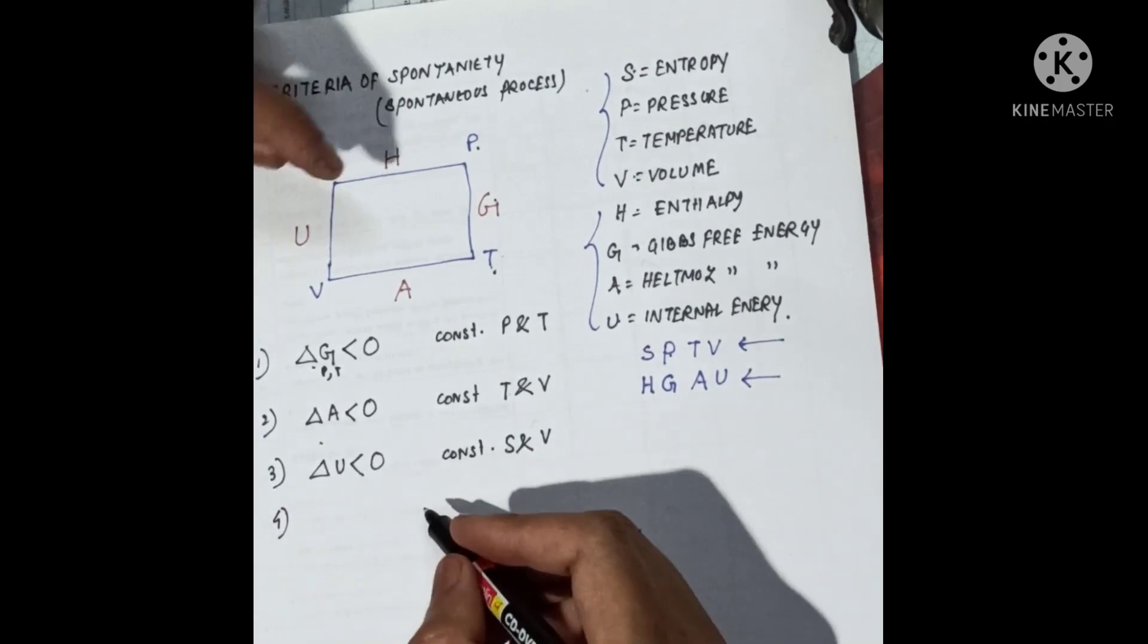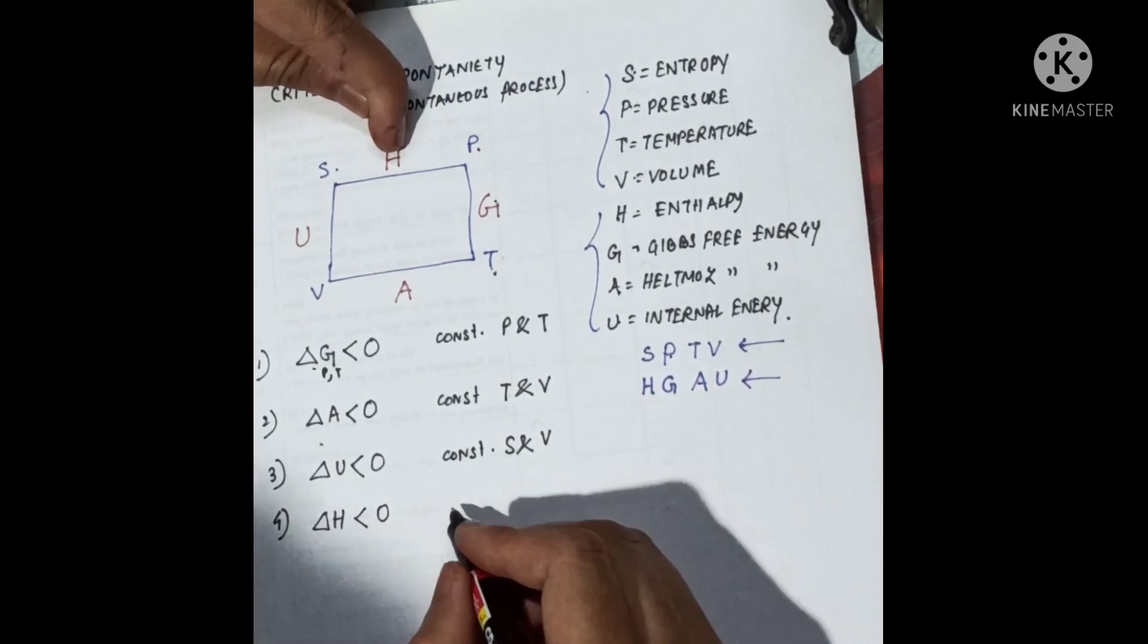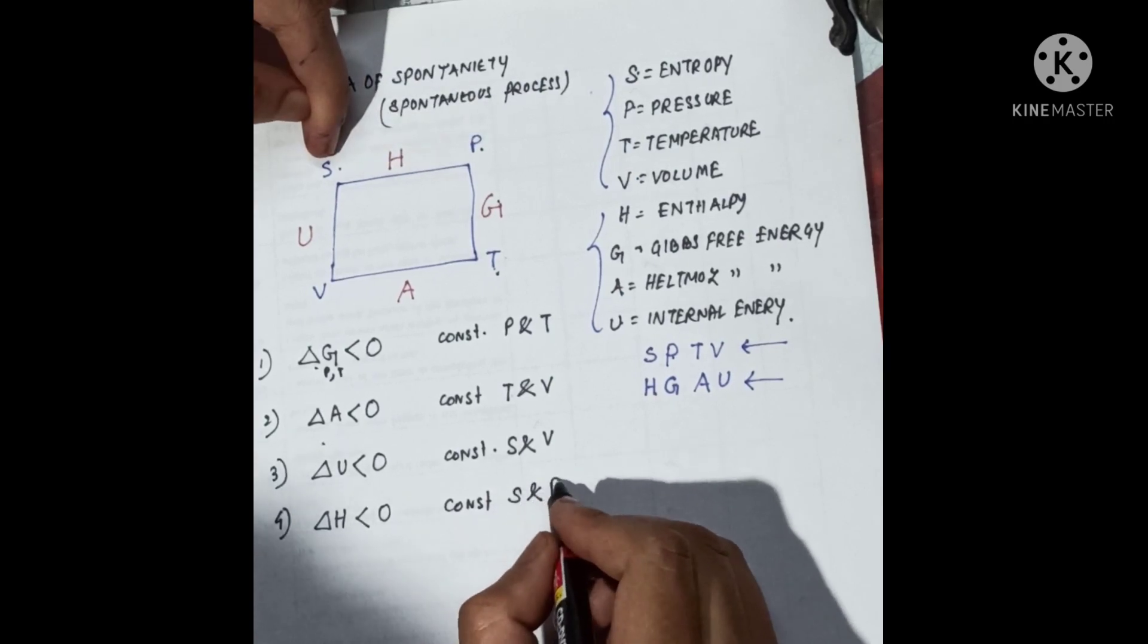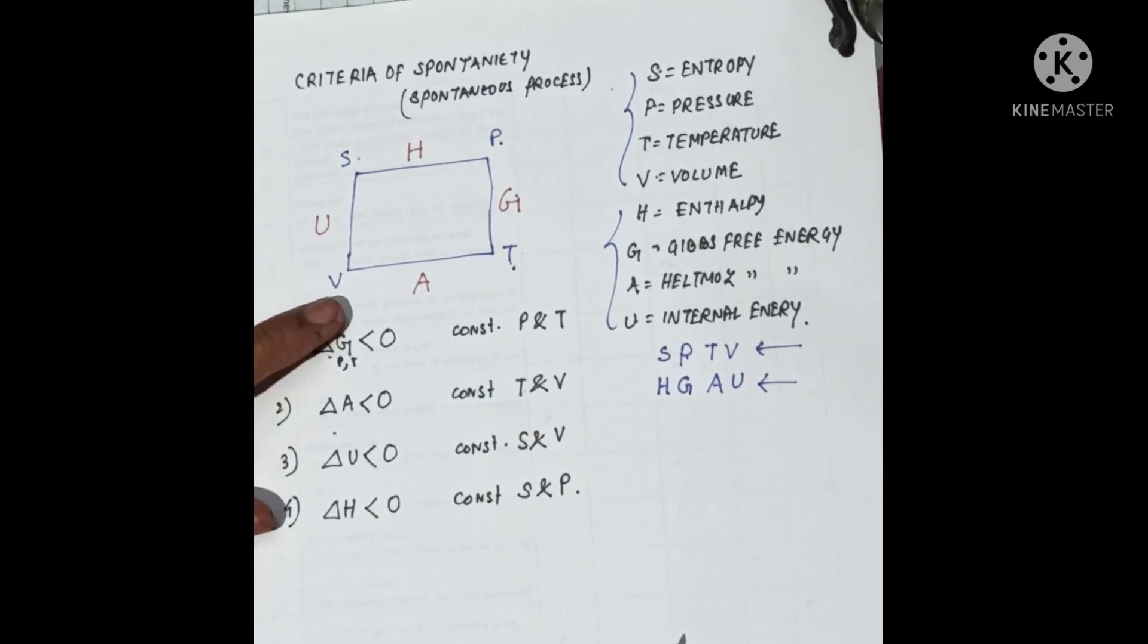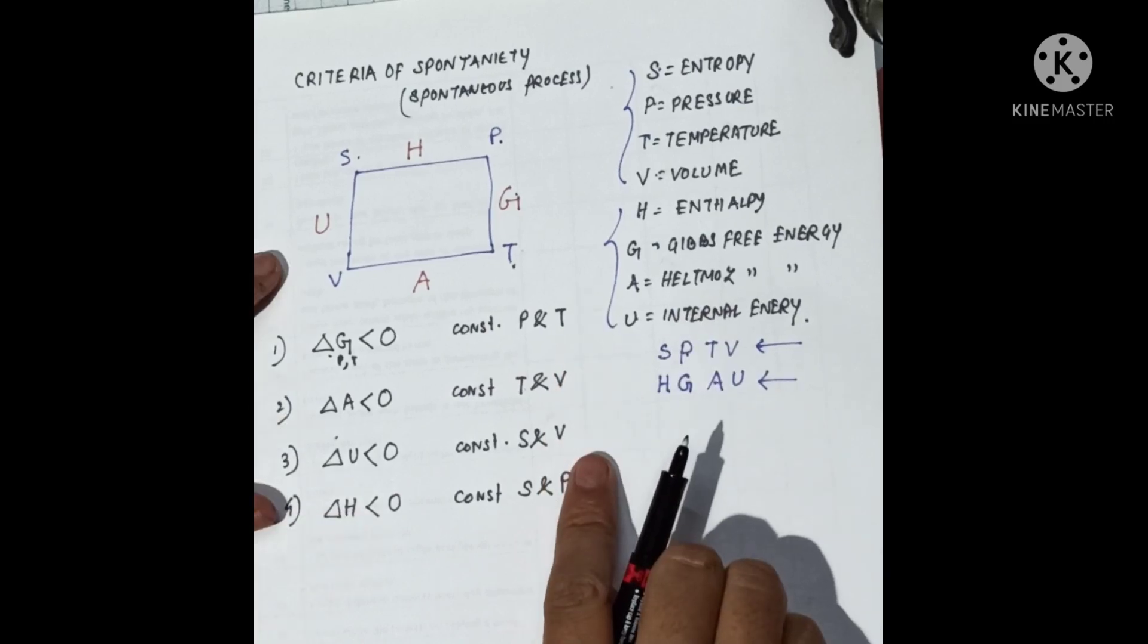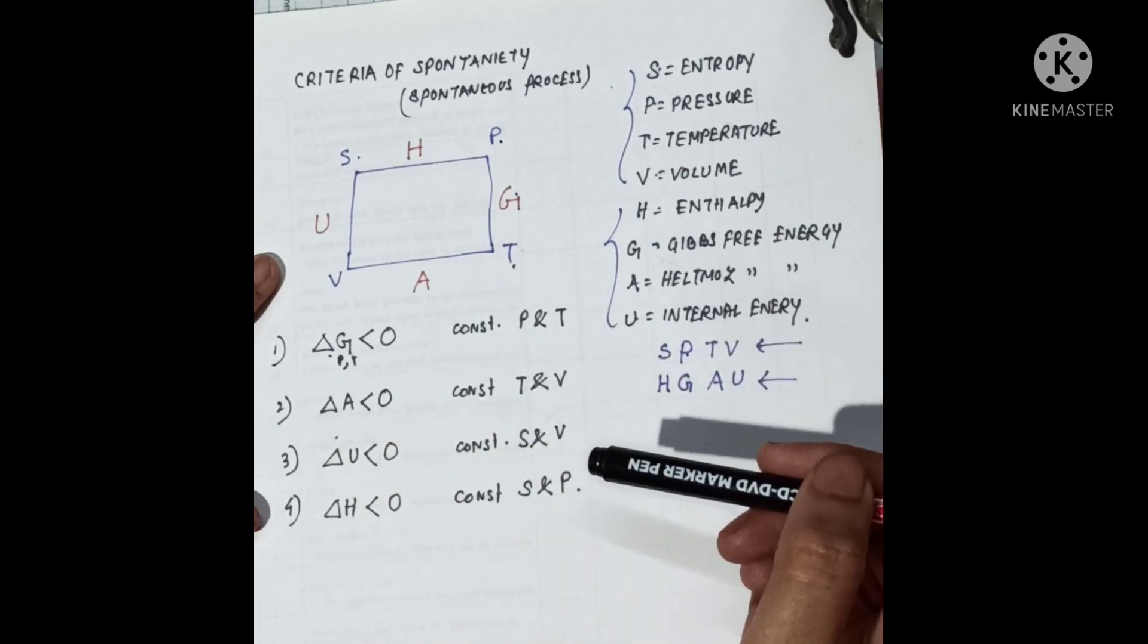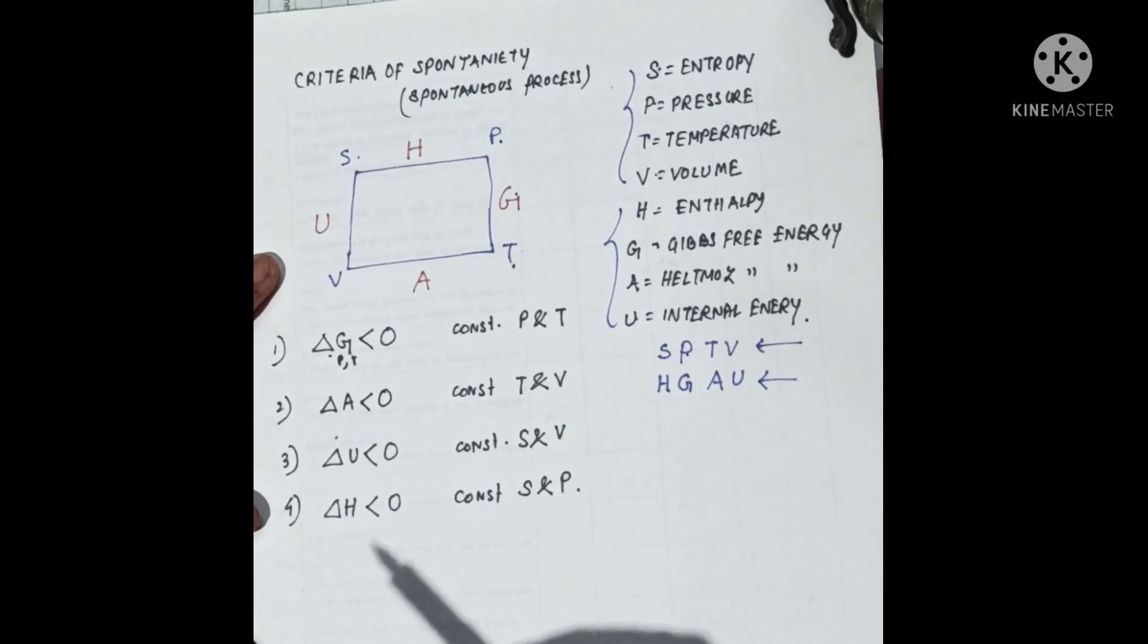The fourth condition is H: delta H less than zero at constant S and P. These are the four conditions which are less than zero at some constant condition. Whenever they ask in an exam, we have to mention this constant condition. It is very confusing, but if you study this sequence, it is very easy.